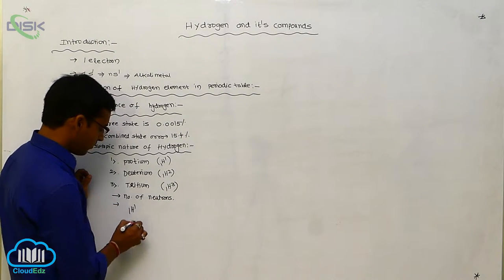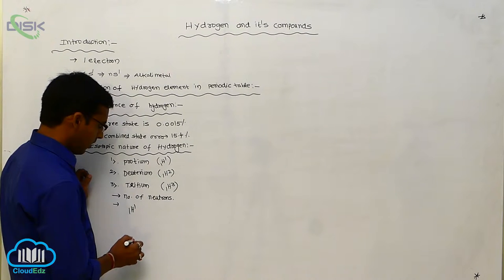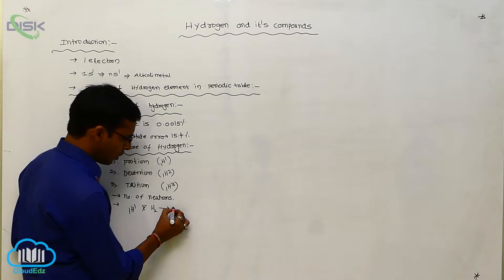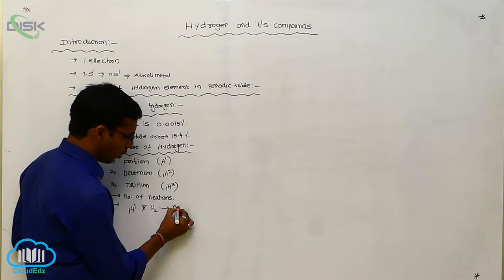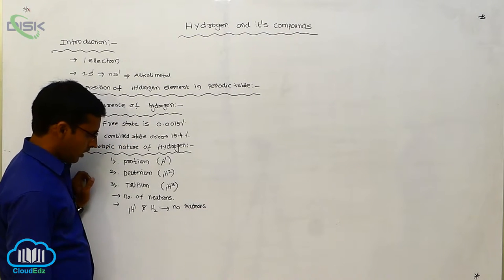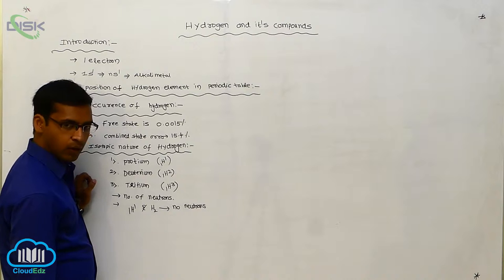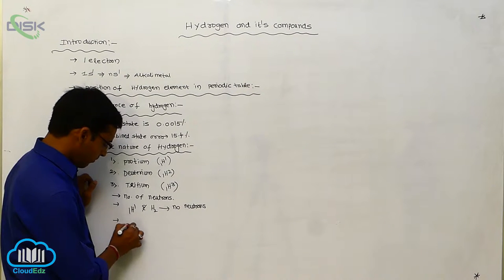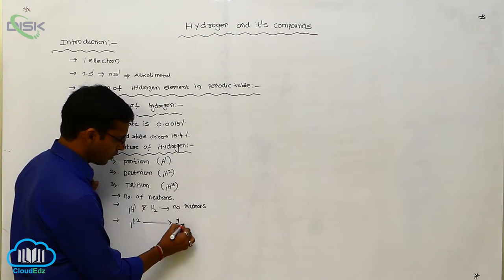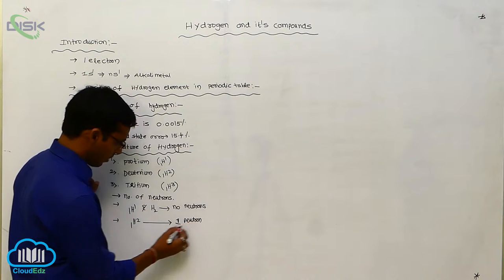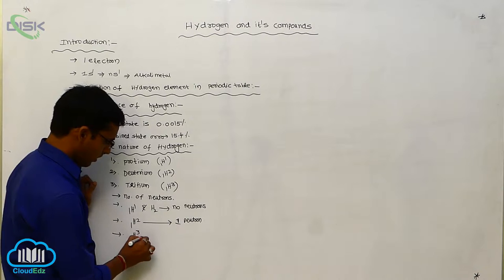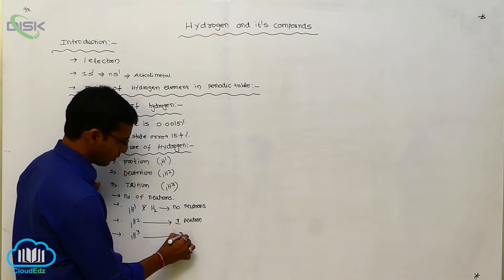Protium contains zero neutrons — no neutrons are present in protium. In deuterium (1H2), it contains one neutron. In tritium (1H3), it contains two neutrons.